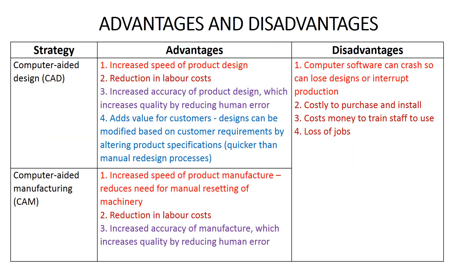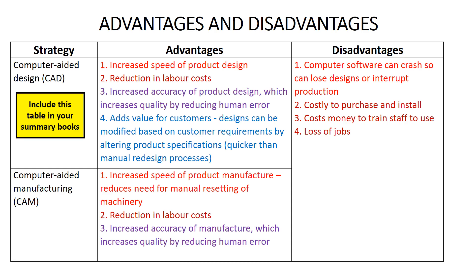We have now described CAD and CAM as technology strategies to improve efficiency and effectiveness. Our first learning intention also requires you to evaluate these strategies — to explain and weigh up both advantages and disadvantages. I've colour-coded each advantage and its related disadvantages in this table. Please include this table in your summary books, together with notes from the discussion which follows where it helps you to better understand the table.